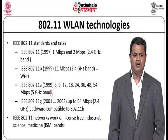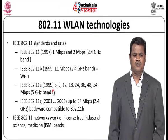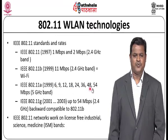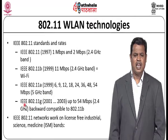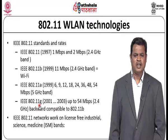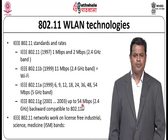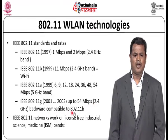802.11a came with different ranges of data rates — 6, 9, 12, 18, and 54 Mbps — in the 5 GHz ISM band. Later, from 2001 to 2003, 802.11g was introduced with speeds up to 54 Mbps in the ISM band of 2.4 GHz, and it is also backward compatible with 802.11b.